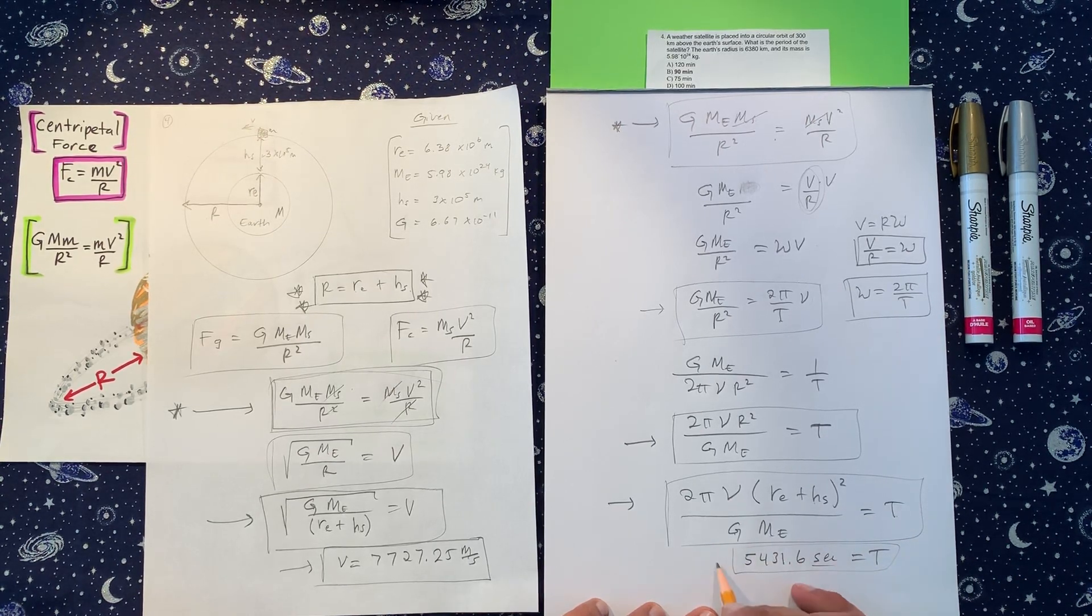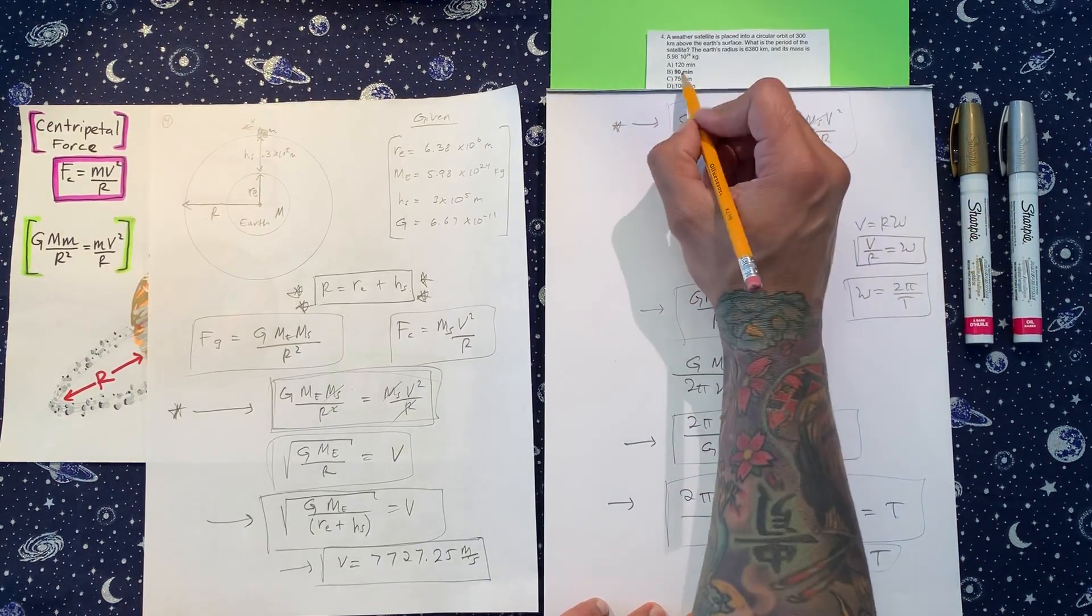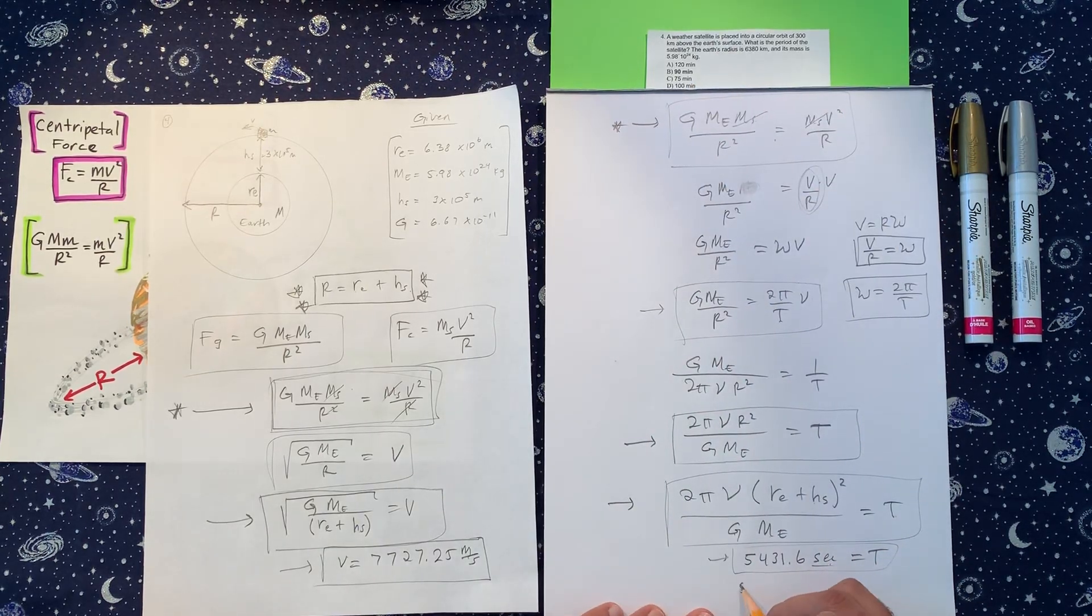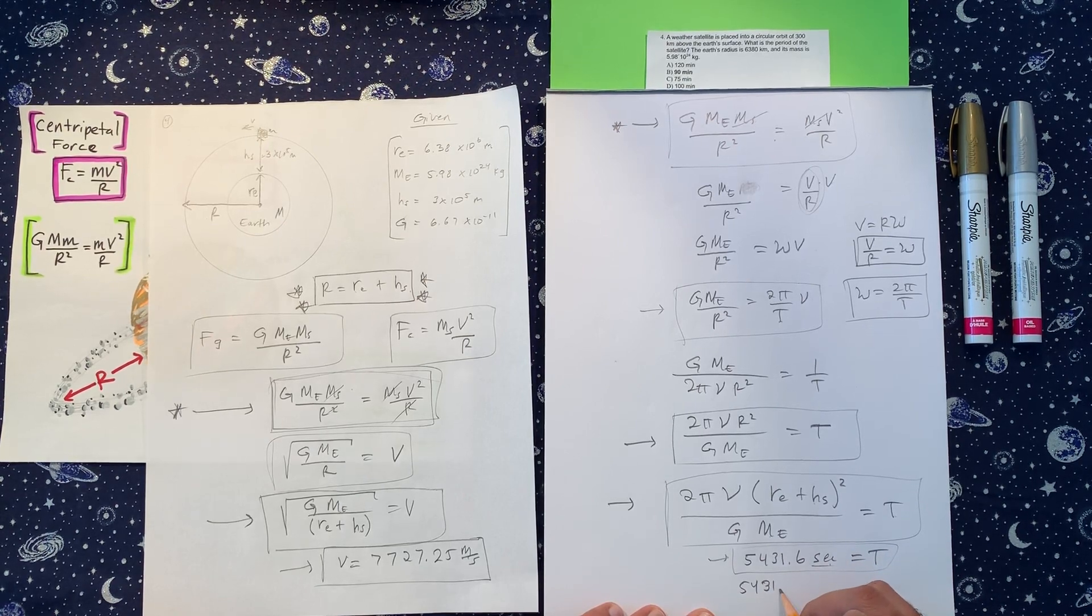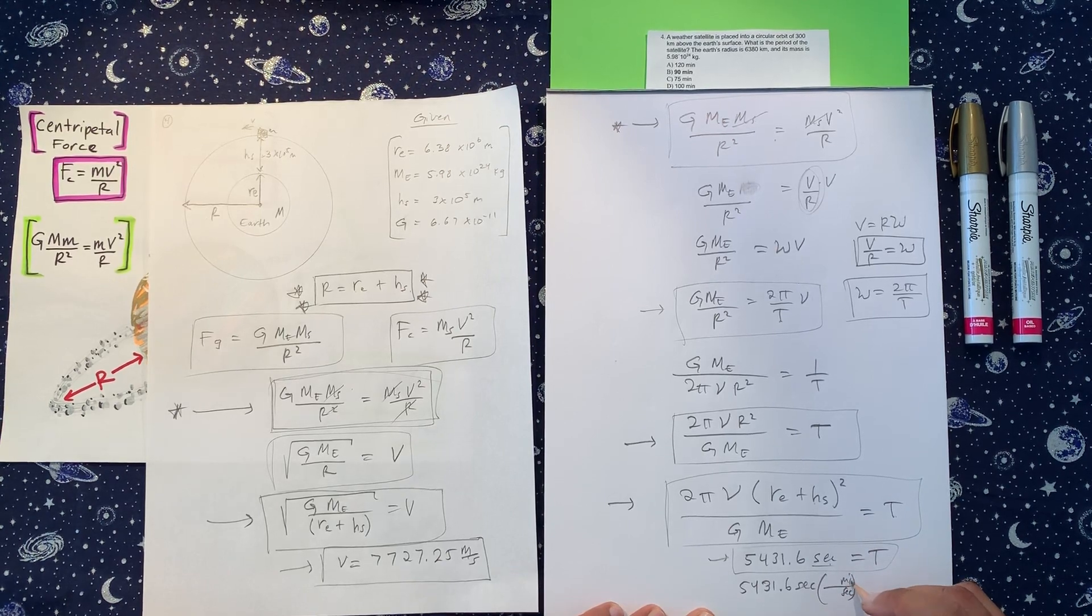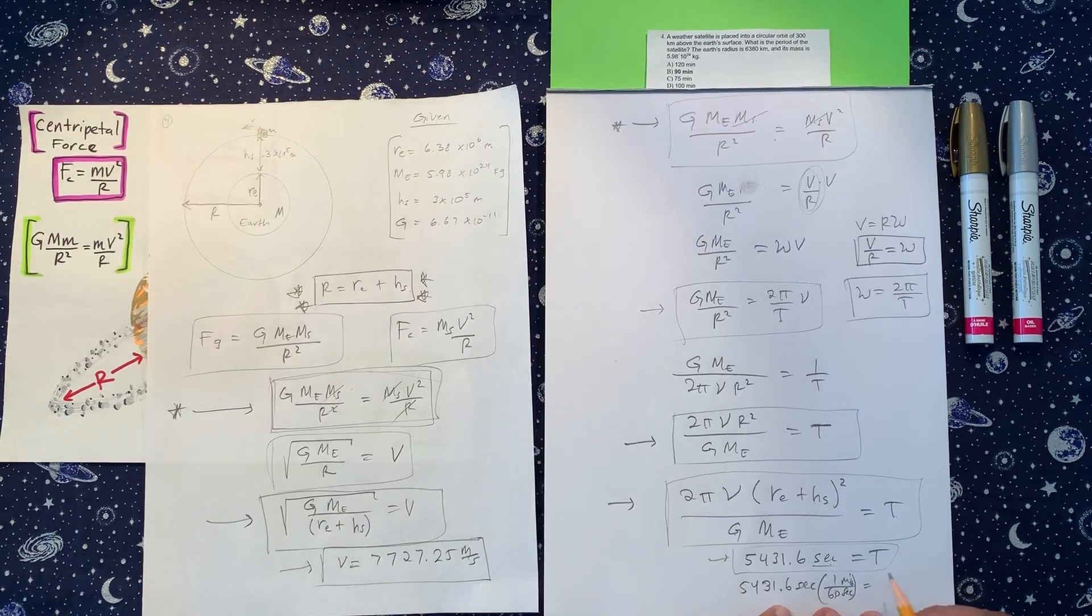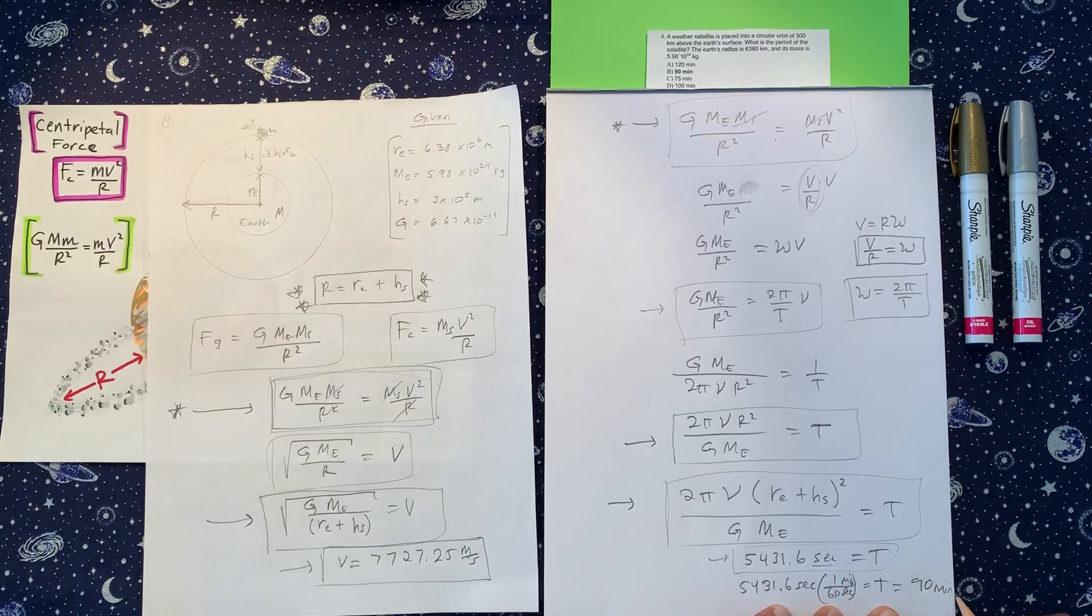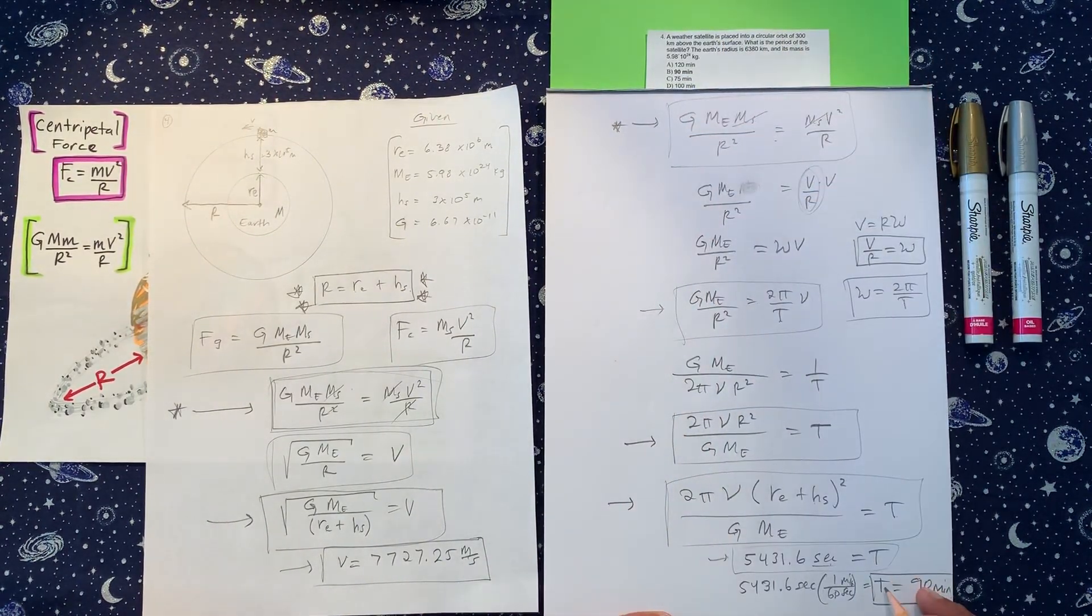Then you get that answer and then you worry because it's not here. And then you calm yourself because you say, oh, all the answers are in minutes and I have mine in seconds. So let's convert that. So 5,431.6 seconds. And we put seconds on the bottom minutes on top. So one minute, 60 seconds. So divide this number by 60, and we're going to get 90 minutes. And then you'll be happy again, because you'll see that your answer is B.